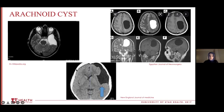The third picture shows an arachnoid cyst that is causing some pressure. This blue line shows the midline, and because of the arachnoid cyst here, it's pushing the left side of the brain to the right, causing a shift.